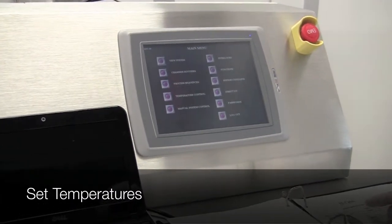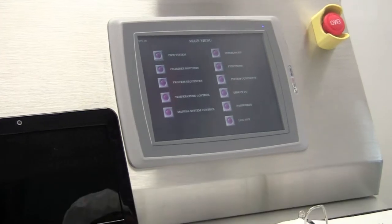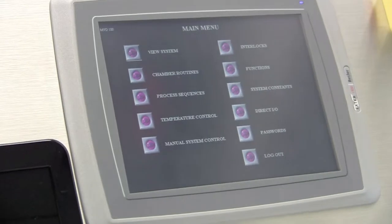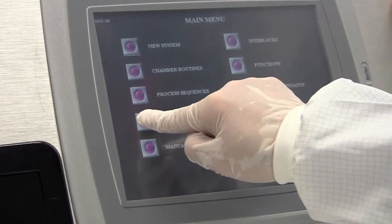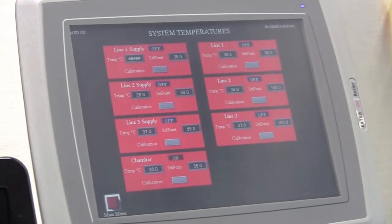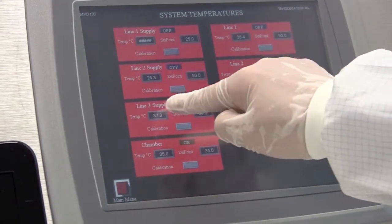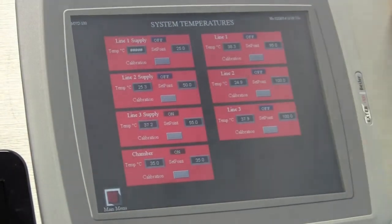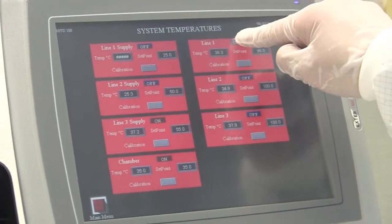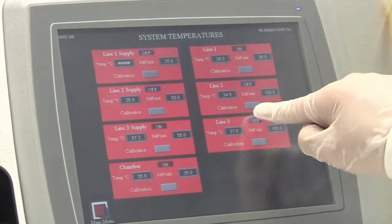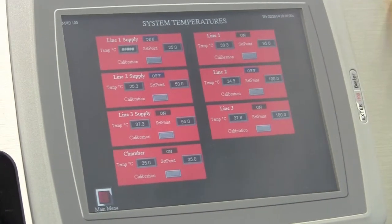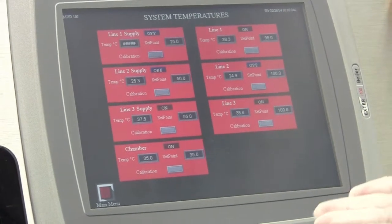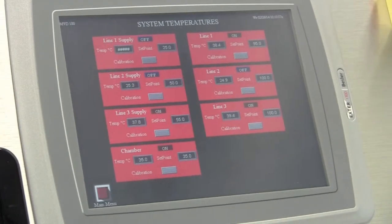Now we need to set up the temperatures for two supplies. One is water, the second is FDTS. So here we need to turn on the line 3 supply by touching this toggle button. And now it's on. We also need to turn on line 1 and line 3. And then we will wait 5 to 10 minutes until the temperature meets the preset temperature.